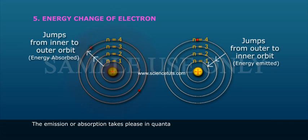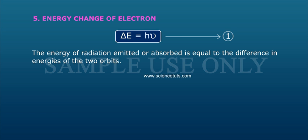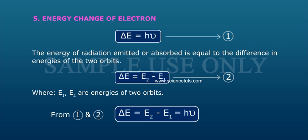The emission or absorption takes place in quanta. ΔE = hν (equation 1). The energy of radiation emitted or absorbed is equal to the difference in energies of the two orbits. ΔE = E₂ - E₁ (equation 2), where E₁, E₂ are energies of two orbits. From equations 1 and 2, ΔE = E₂ - E₁ = hν.